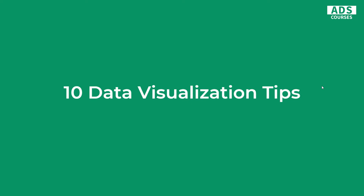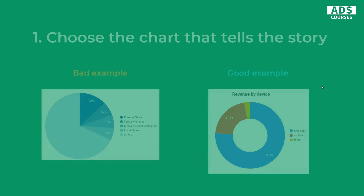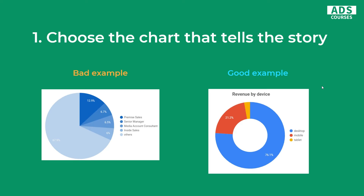And now I will share with you my top 10 data visualization tips. I will show you good and bad examples for each of them. The first one is to choose the chart that tells the story, because you always want to tell a story with your data visualization. This is what data visualization is for — to tell a story, to show something, to make it more clear to the eye.